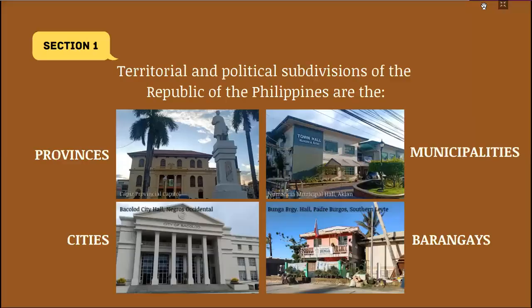So, what is stated in the 1987 Constitution regarding local government? According to Section 1, the territorial and political subdivisions of the Republic of the Philippines are the provinces, led by governors; cities — including highly urbanized cities, component cities, and independent component cities — led by city mayors; municipalities, led by municipal mayors; and the most basic unit, the barangay, led by barangay captains.